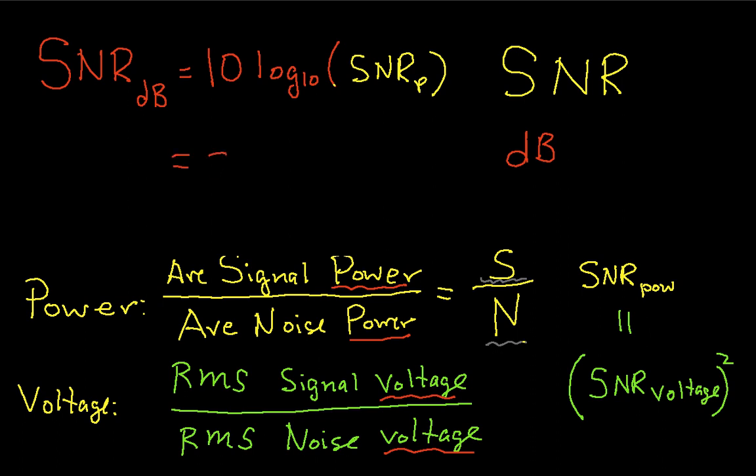And it's also 20 log to the base 10 of my voltage signal-to-noise ratio. Hopefully you feel good about this because the power signal-to-noise ratio is obtained by squaring the voltage signal-to-noise ratio. And so because I have a log and I'm squaring things, that 2 comes out in front and I get basically this result.